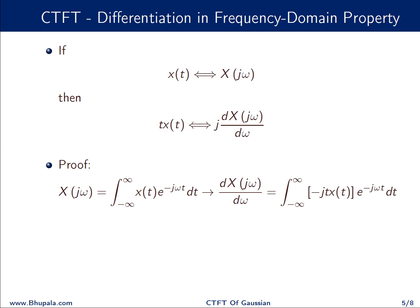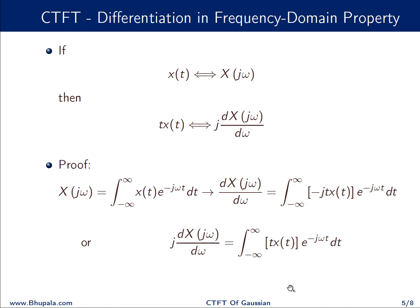If we differentiate X(jω) with respect to ω, note that ω appears only in e^(−jωt), so differentiating gives −jt·x(t)·e^(−jωt) dt. This is the Fourier transform of the function in the square bracket, which is −jt·x(t). After multiplying both sides by j, we get j·d/dω of X(jω) = t·x(t)·e^(−jωt), confirming that the Fourier transform of t·x(t) is j·d/dω of X(jω).